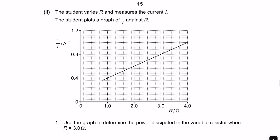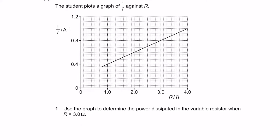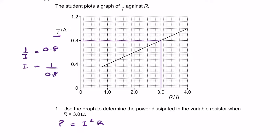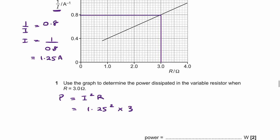The student varies R, measures current, and plots a graph. We use P equals I²R to find power at R equals 3 ohms. From the graph, 1/I equals 0.8 at R equals 3 ohms, so I equals 1/0.8 equals 1.25 amps. Power equals 1.25 squared times 3, giving approximately 4.7 watts.